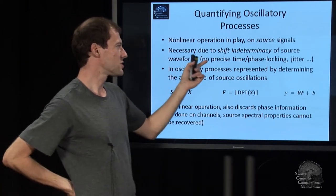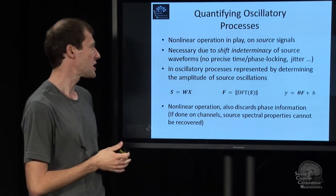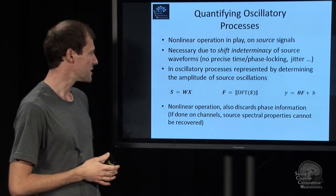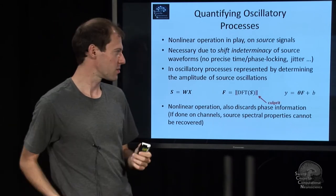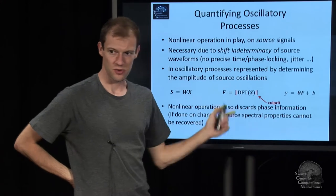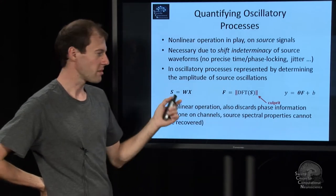To be able to use these observations, you have to somehow integrate over all possible shifts or pool. And that's in oscillatory processes usually done by calculating the magnitude of something, complex magnitude actually.